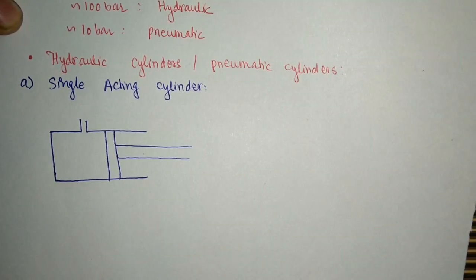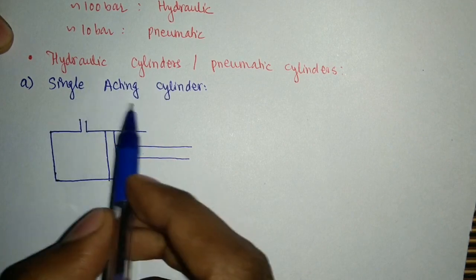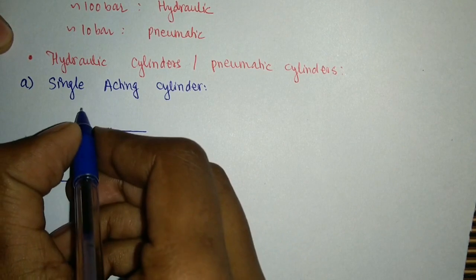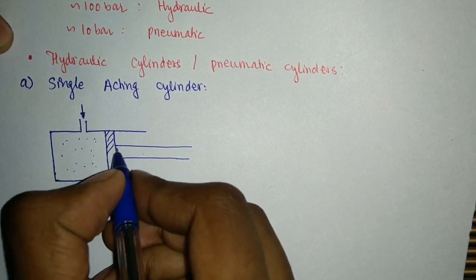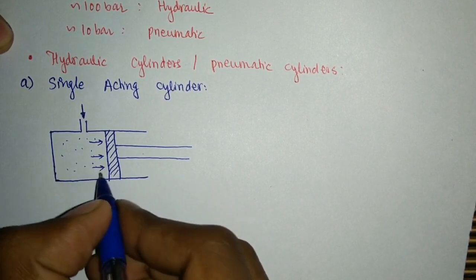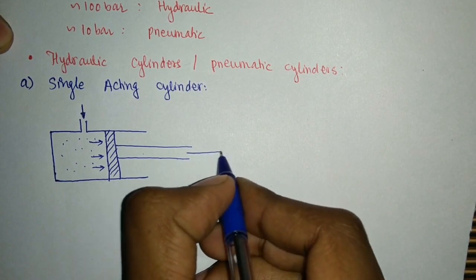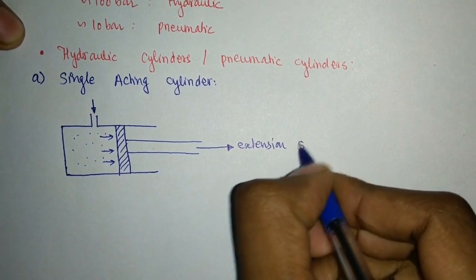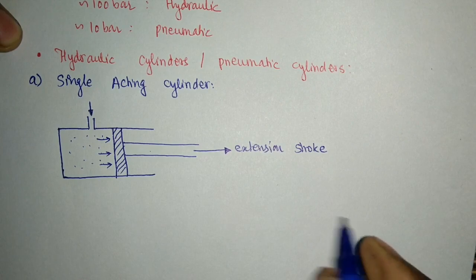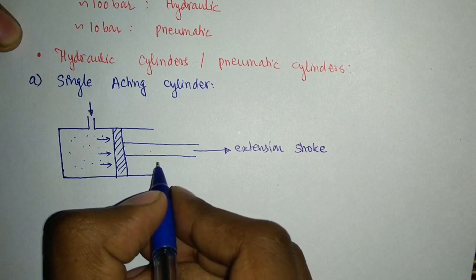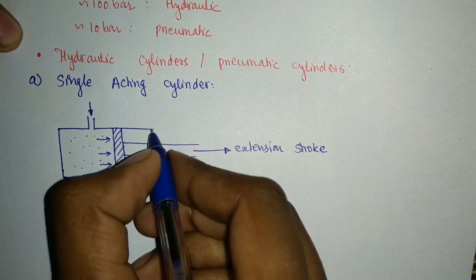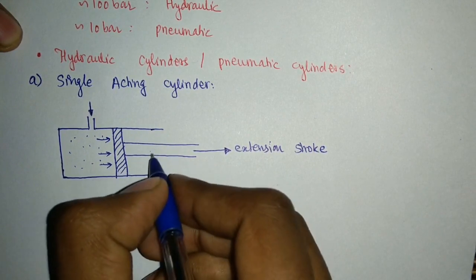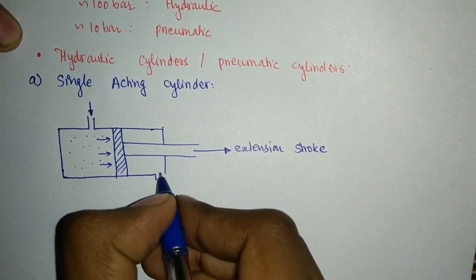Based upon construction, we can divide hydraulic and pneumatic actuators into certain categories. The first category is the single acting cylinder. In a single acting cylinder, the liquid, fluid, or air enters from one side and exerts pressure onto the piston, causing it to move in the forward direction. This is called the extension stroke or the desired direction. There is also an air vent on the other side.